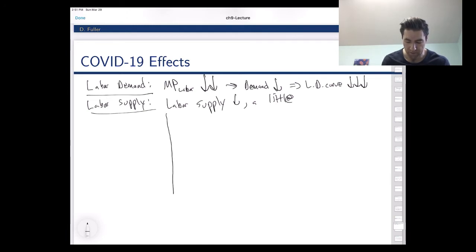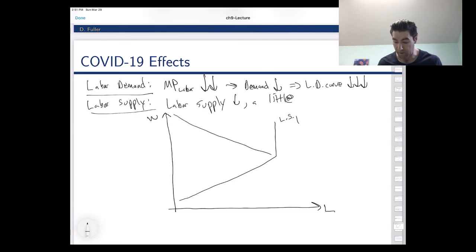So if we draw this out in our labor market diagrams, we've got labor on the horizontal axis, the wage on the vertical axis. And where was our economy before this all started? Call this labor supply one and labor demand one.